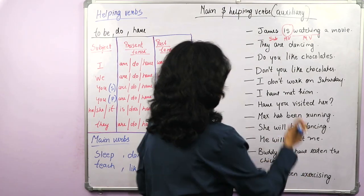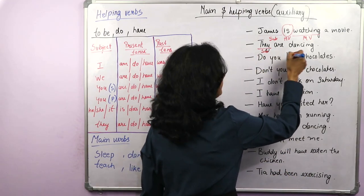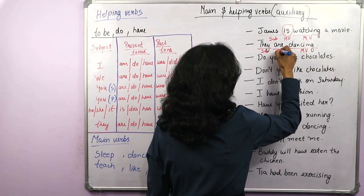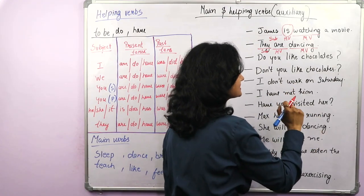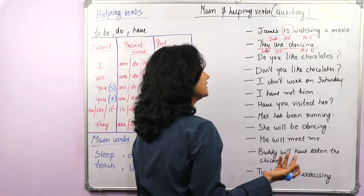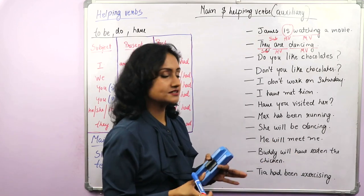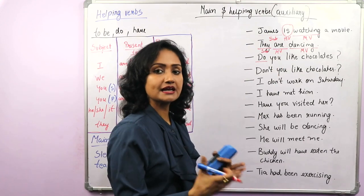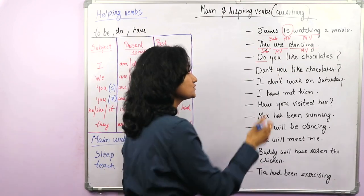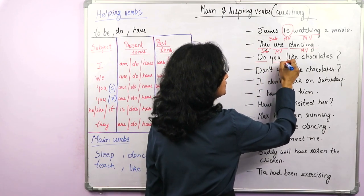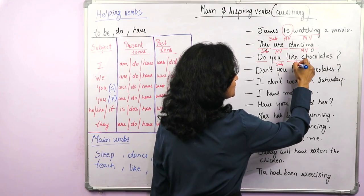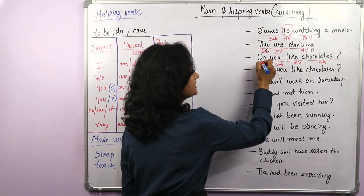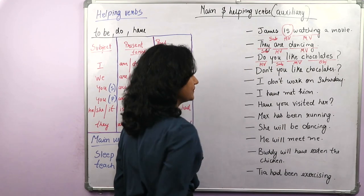'They are dancing.' They is the subject, dancing is the main verb, and are is the helping verb. 'Do you like chocolates?' It's a question — an interrogative sentence. To frame an interrogative sentence we need the helping verb. You is the subject, like is the main verb, chocolates is the object, and do is the helping verb.